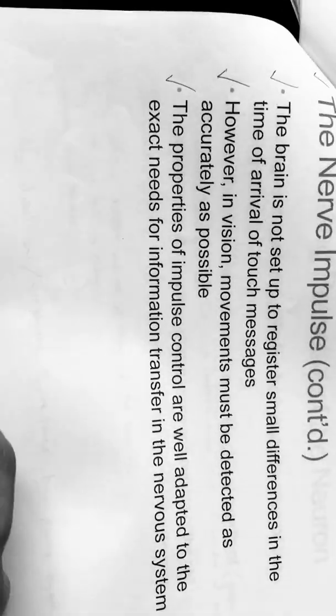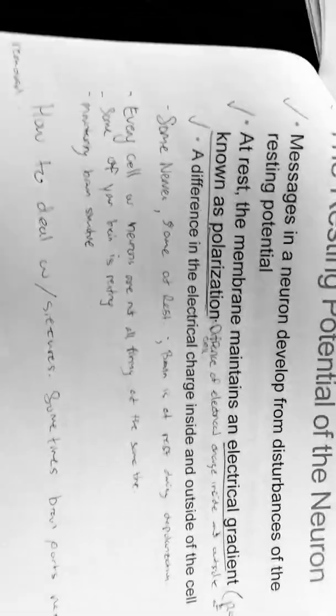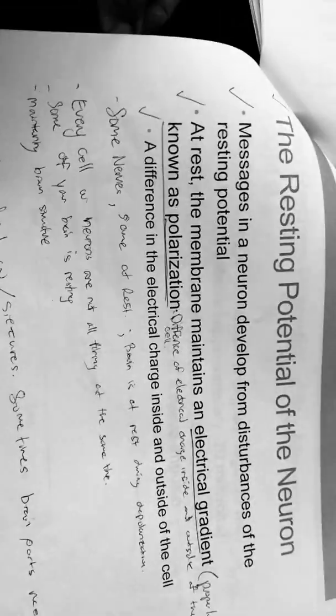The properties of the neuron control are well adapted to the exact information transfer to the nervous system—the resting potential of the neuron.